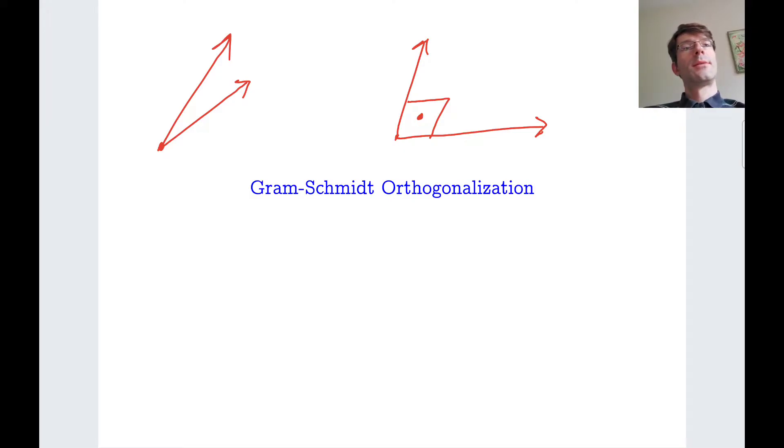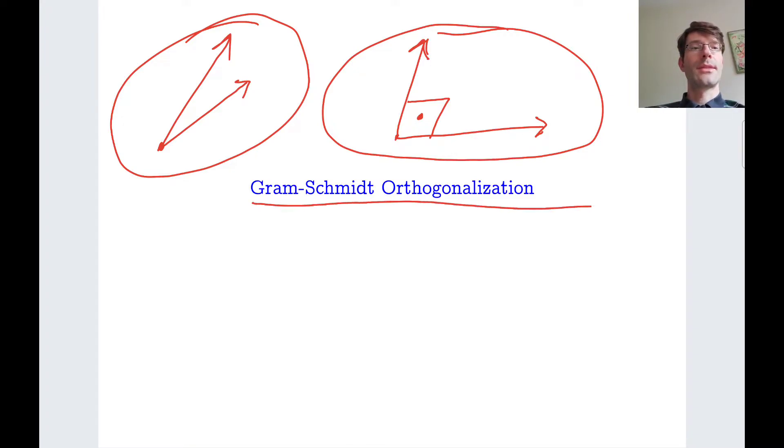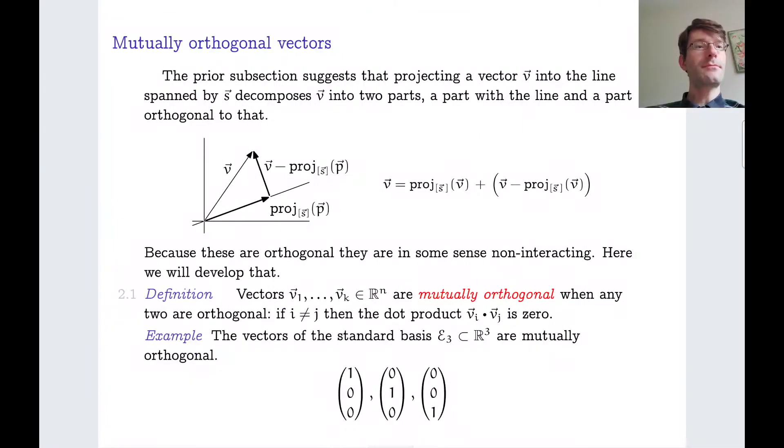In other words, we want a basis for the subspace defined by the two vectors here, but the basis elements should be orthogonal to each other. That's what Gram-Schmidt orthogonalization is about. And we are going to achieve this using orthogonal projections as explained in the last video. In particular, the view that we want to take is that given some vector v, we compose it into two parts or into two components. One part is on some line defined by a vector s, and the other part is orthogonal to that line. So these two vectors are orthogonal to each other.